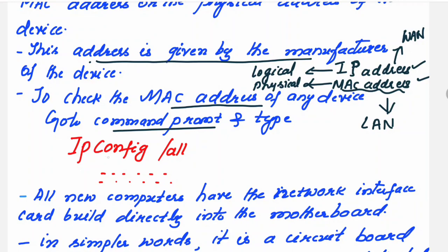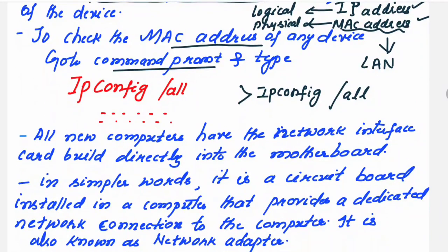To check the MAC address of any device, go to the command prompt and type the command: ipconfig /all. When you type this command, you will get details of your IP address if you have an internet connection, and also the MAC addresses — one for the wired connection and another for the wireless connection.